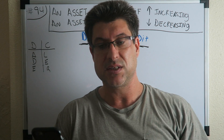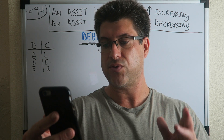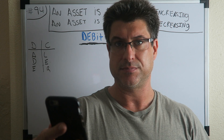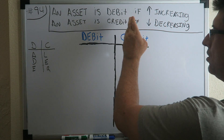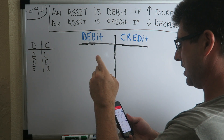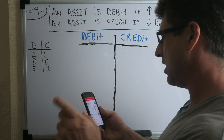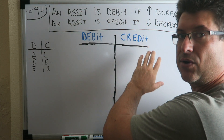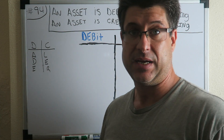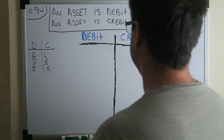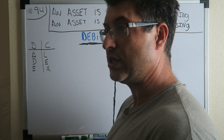Let's answer this accounting question. The viewer asks: 'Why are some entries on the right credit side considered assets?' The right side is the credit side, yes. He says he thought assets were only on the debit side — the debit side meaning the left. So the question is: why are assets found on both the left debit side and the right credit side?